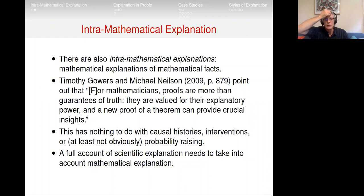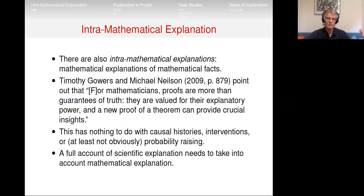The explanation doesn't rest in the theorem itself — it rests in the proof. I'm not committed to the view that proofs are the only place where mathematical explanations arise, but I'll focus on those today. Whatever Gowers and Nelson are talking about when they say 'explanatory power,' it sounds exactly like what philosophers of science would say about an explanation in science — valued for explanatory power — but with nothing to do with causal histories, interventions, or probability-raising.